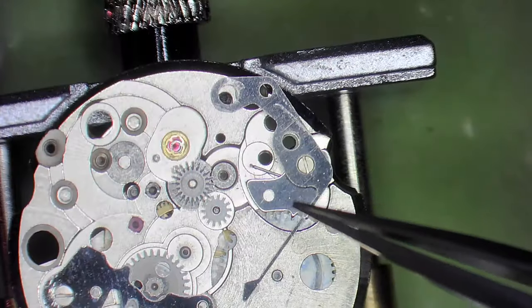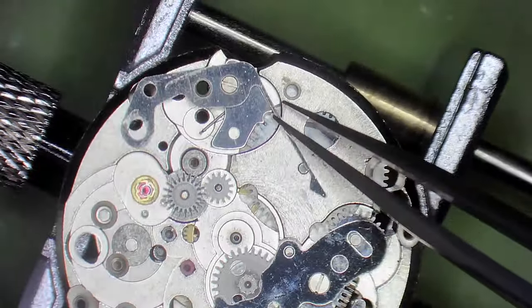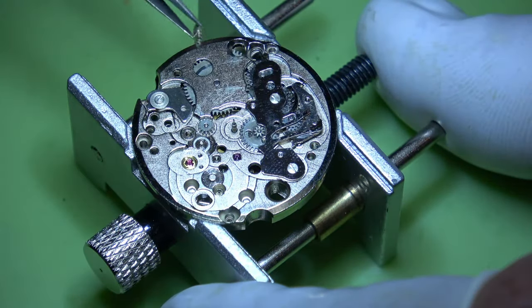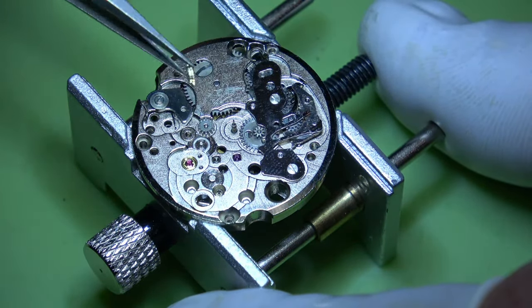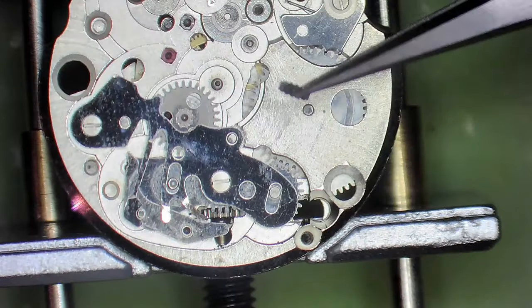With this side, we'll start disassembling. That's the date jumper spring, and that's the screw for the click spring. You can take these intermediate wheels out.